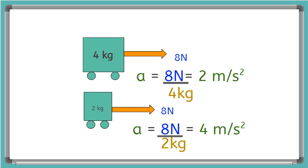Plugging those numbers in: the top cart gets acceleration equals 8 newtons over 4 kilograms equals 2 meters per second squared, and the lighter cart gets 8 newtons over 2 kilograms equals 4 meters per second squared. So when the same force is applied to two objects with different masses, the object with the lighter mass will accelerate faster than the heavier object.